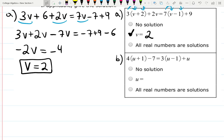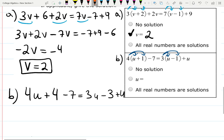For B, I will distribute 4, multiply by u and by 1. And over here, 3 multiply by u and by -1. 4 times u is 4u, plus 4 times 1 is 4, minus 7 equals 3 times u is 3u, minus 3 times 1 is 3, plus u. So this piece here was part of distribution, and this piece here was part of distribution.